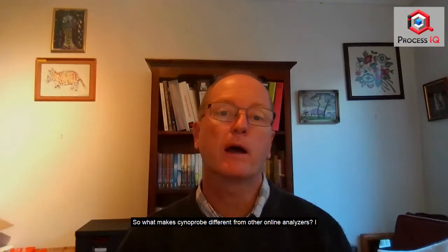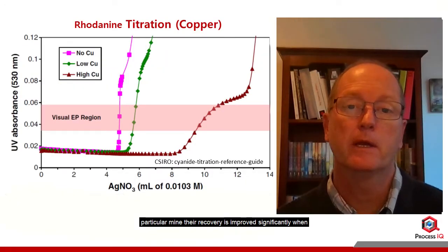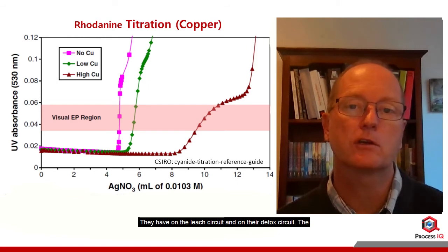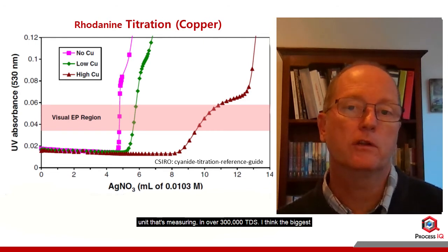So what makes Cynoprobe different from other online analyzers? I think the thing that makes Cynoprobe different is its ability to measure the available cyanide for leaching gold. Some mines that have very high copper struggle with recoveries because of the available cyanide. At one particular mine, their recoveries improved significantly when they used the Cynoprobe readings — they now have five analyzers, on the leach circuit and on the detox circuit. The unit also has fewer interferences from things such as thiosulfate. Salt also does not affect the readings — we have one unit that's measuring in over 300,000 TDS.